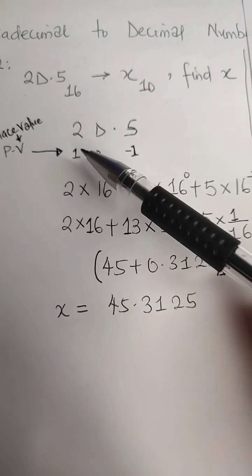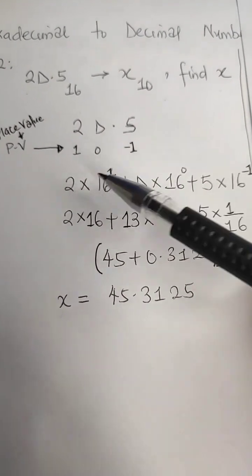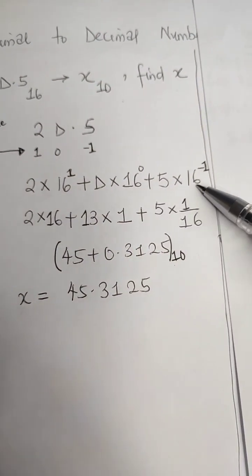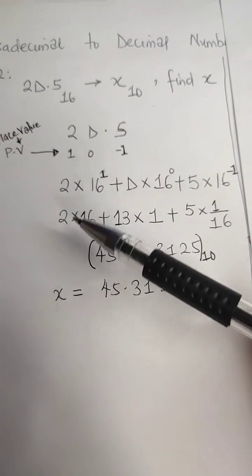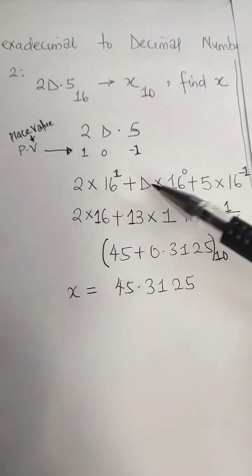...plus D times 16 raised to the power 0, plus 5 times 16 raised to the power -1. Now, 16 raised to the power 1 will be 16, 16 raised to the power 0 will be 1, and here we have 1 over 16.